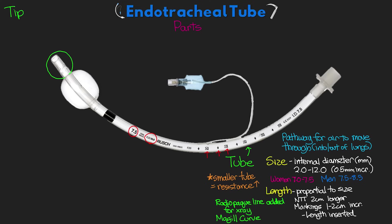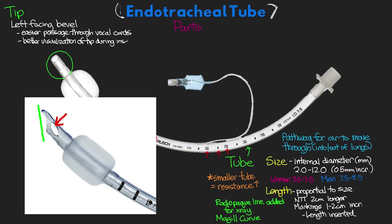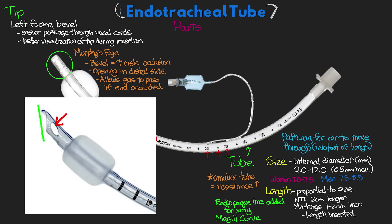The end of the tube is cut with a left-facing bevel, which allows for easier passage through the vocal cords and provides better visualization of the ET tube tip during insertion. Also at the end of the ET tube is an extra opening called Murphy's eye. Because the tube is beveled, there is a greater risk of occluding the end if it contacts the tracheal wall, so an opening is cut into the distal side of the wall to allow gas to pass through in the event the end of the ET tube is obstructed.